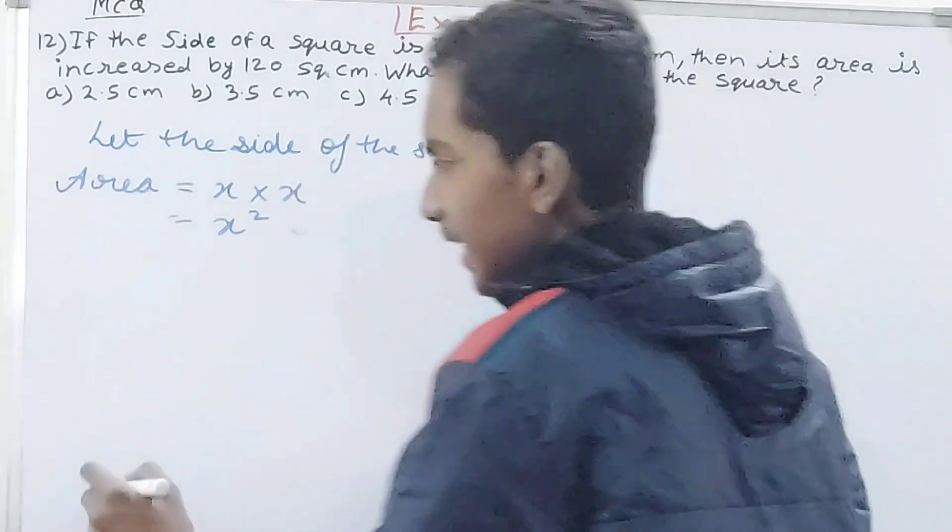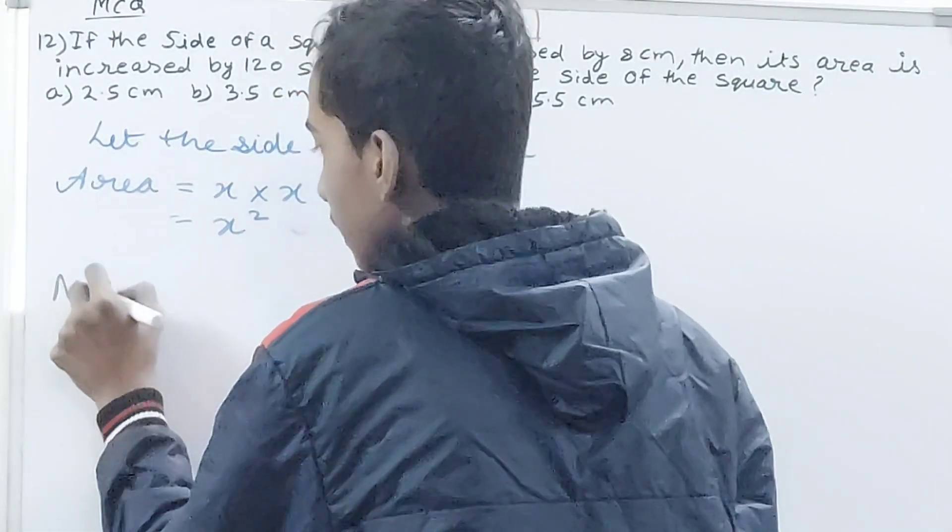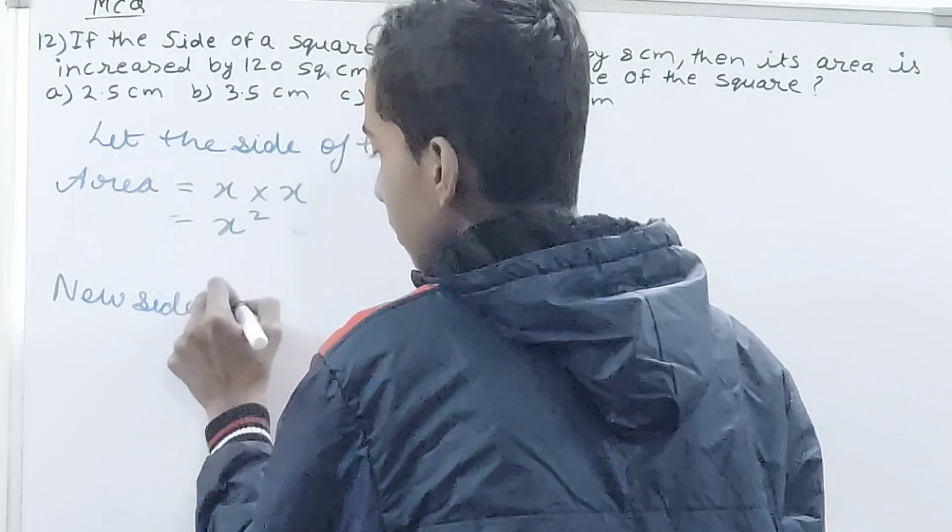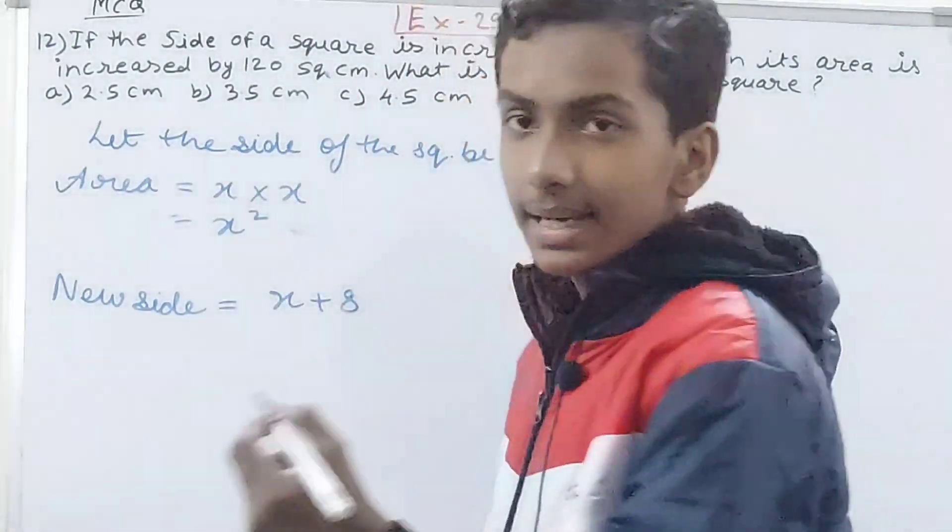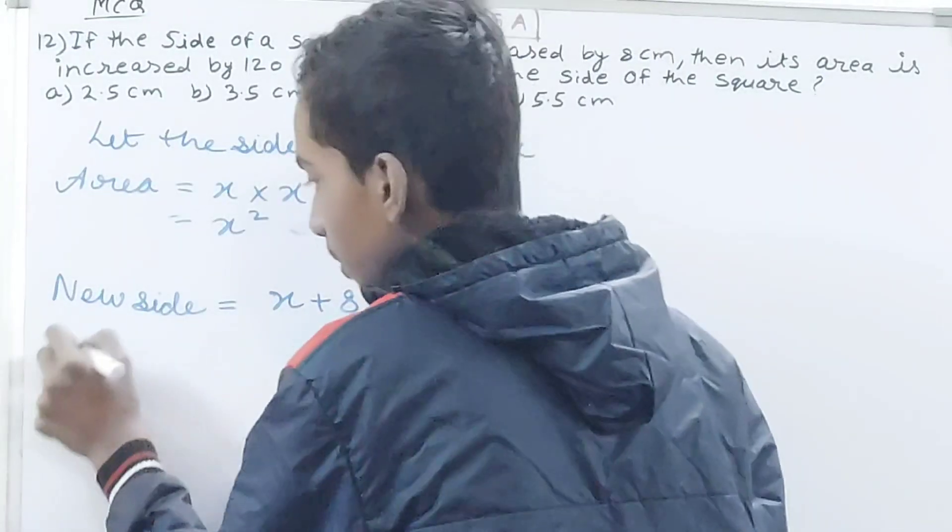Now it says that the side is increased by 8 centimeters. So new side is x plus 8 and the area becomes x plus 8 whole squared.